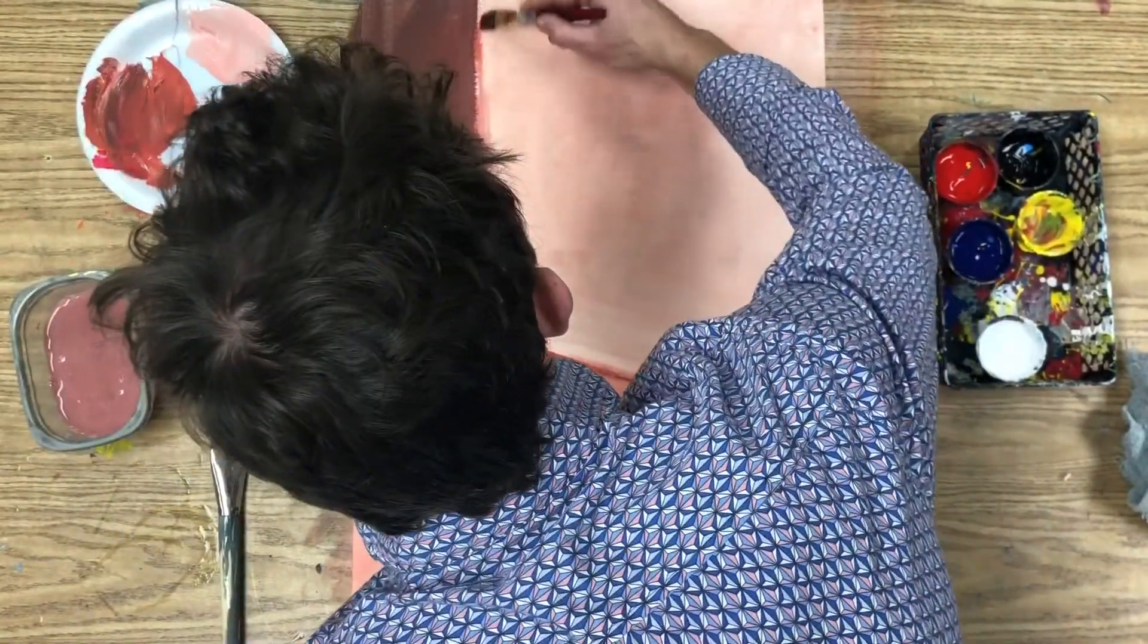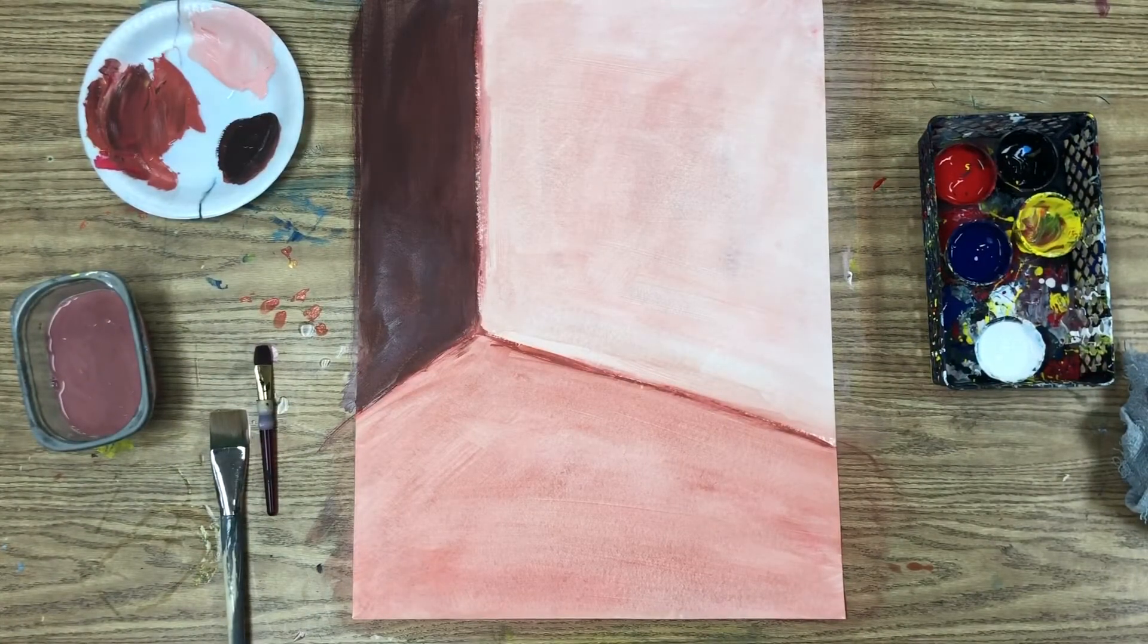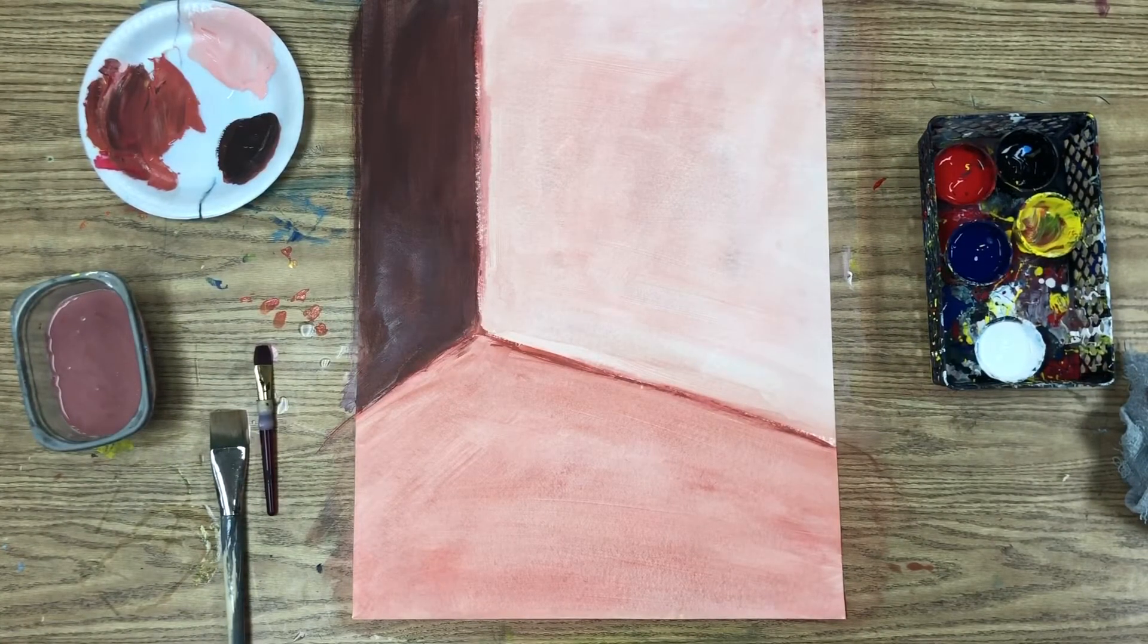And you will have completed a room with a light wall, a dark wall, and medium values on the floor. We'll do the next step tomorrow. Let's get started.